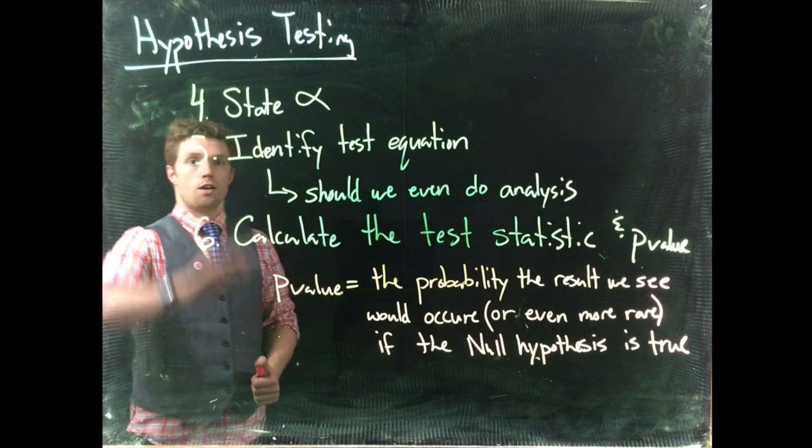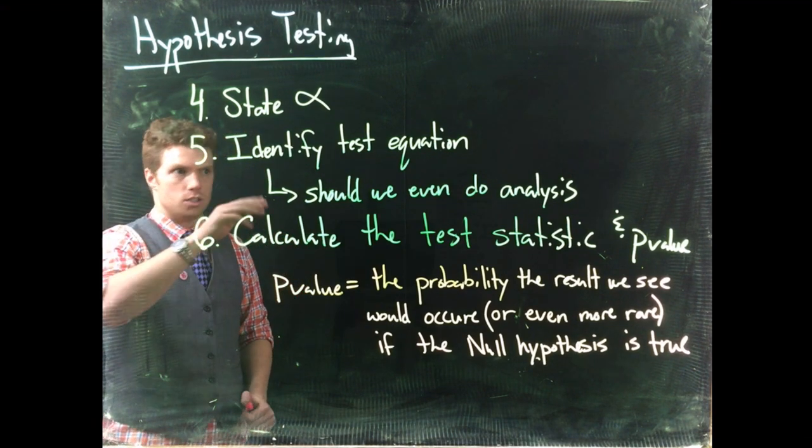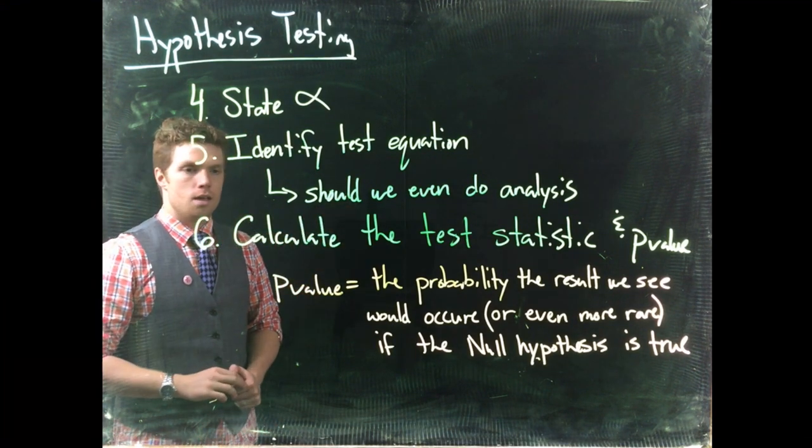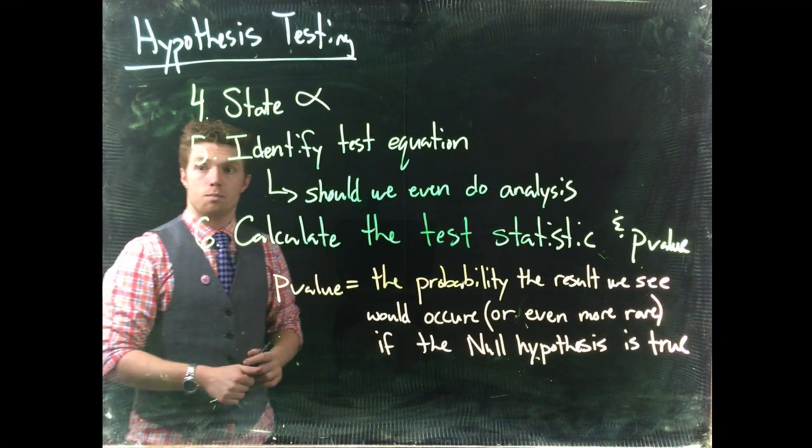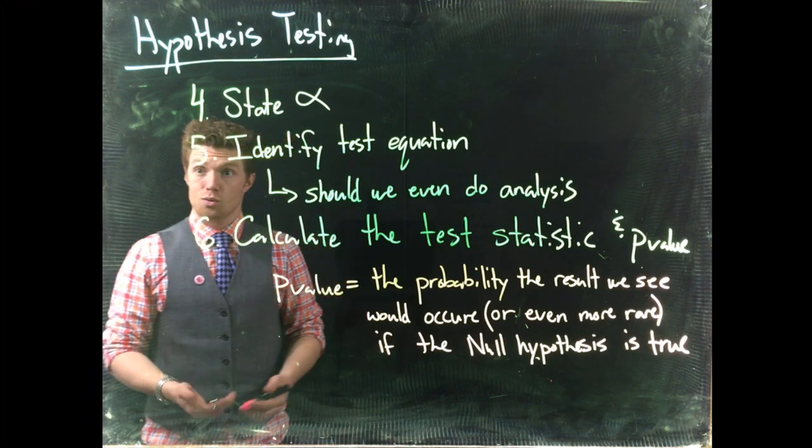We state our alpha, identify our test equation and if we should even do the analysis, then calculate the test statistic and the p-value. The test statistic is going to be like a z-score or a t-score for these right now.